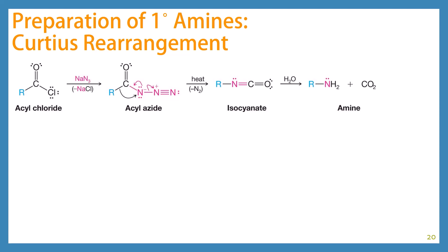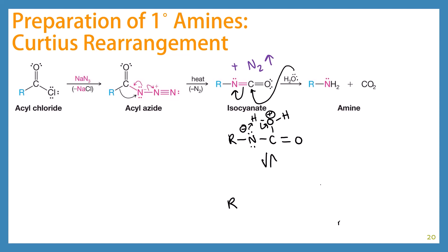The Curtius rearrangement has similar mechanistic steps. An acyl chloride reacts with sodium azide to give an acyl azide. When heated, the acyl azide rearranges and liberates nitrogen gas — a very favorable step — giving an isocyanate intermediate. Water then attacks the isocyanate carbon, pushing electrons onto nitrogen. An intramolecular proton transfer gives a carbamic acid-type intermediate that decarboxylates to give the primary amine and carbon dioxide.